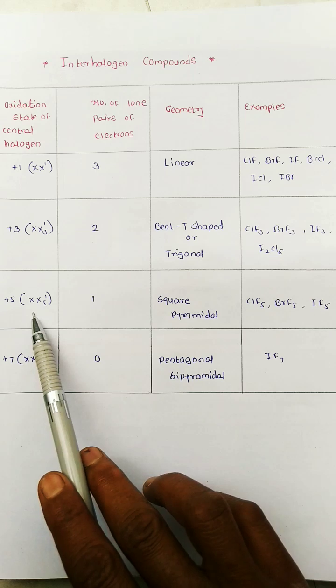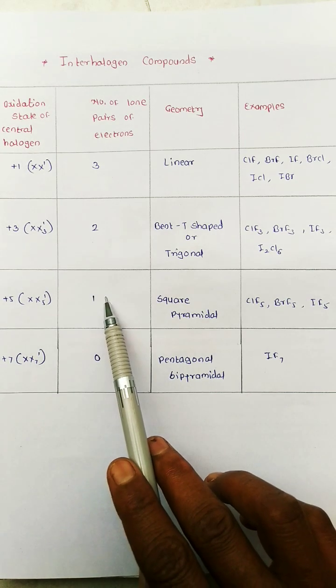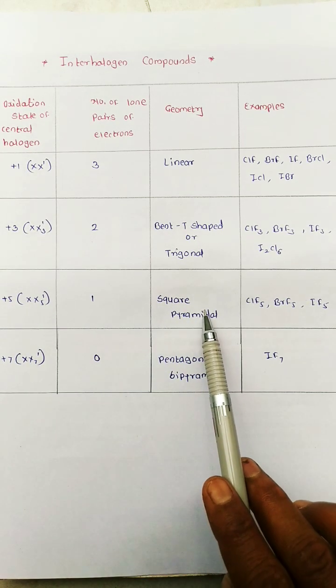Oxidation state of central halogen plus 5, that is number of lone pair 1, geometry square pyramidal.